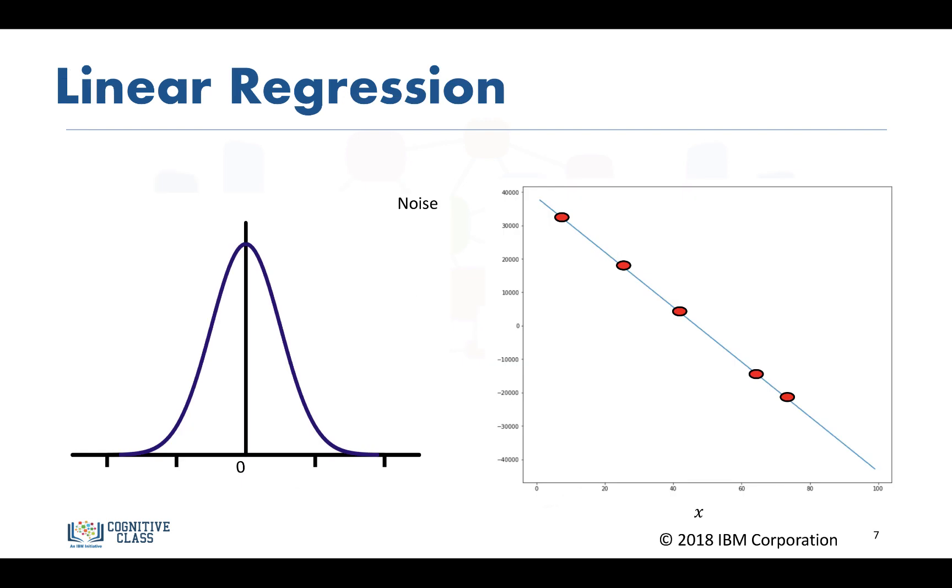In linear regression, we assume some kind of noise is added to our model. The horizontal axis represents the value, and the vertical axis represents the probability of that noise being added.